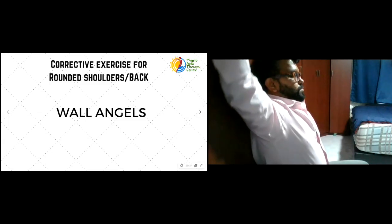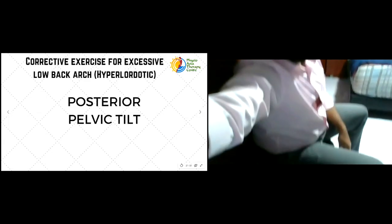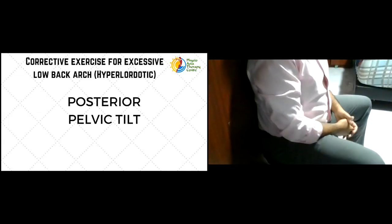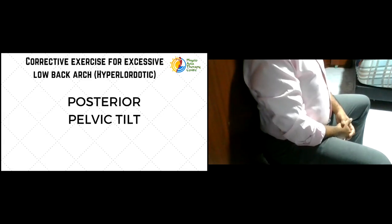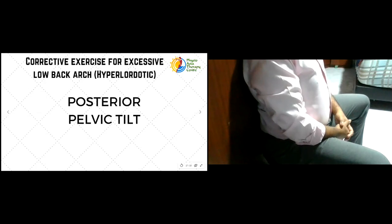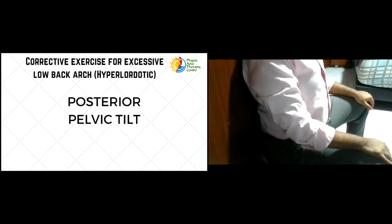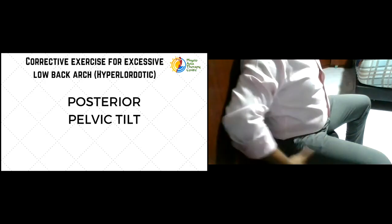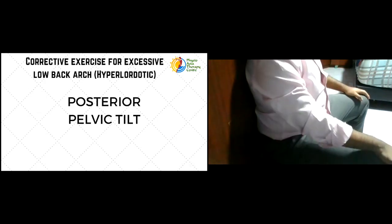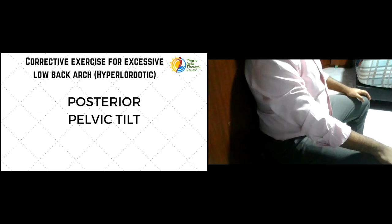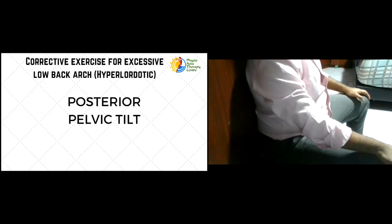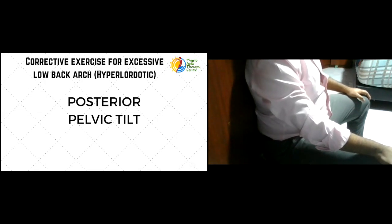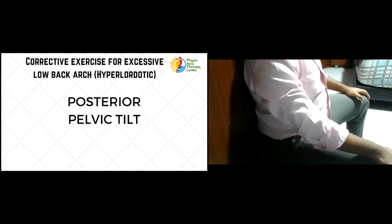The next corrective exercise is for those with a hyperlordotic posture — an excessively high low back arch. We call this the posterior pelvic tilt. Sit against the wall, then roll your hips backward in an effort to flatten the curve on your low back. This exercise strengthens your abdominal muscles as well as your gluteal muscles. Hold the position for five seconds, do 10 repetitions for two sets, twice daily.